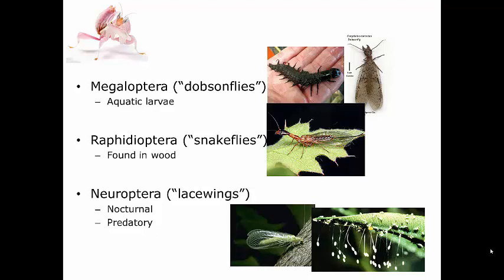Neuropteran larvae have incomplete digestive systems — no hindgut, no rectum, no anus. The midgut ends at a dead end, which fits their predatory lifestyle: living among prey, they don't want to leave fecal matter that would alert prey to their presence. All waste materials collect in the midgut throughout larval development, and during the final larval molt that waste is expelled along with the shed exoskeleton. As adults they have a fully formed digestive system including a hindgut.